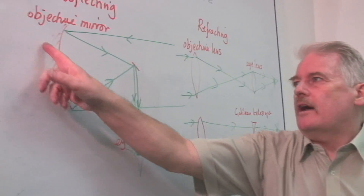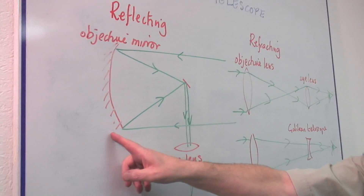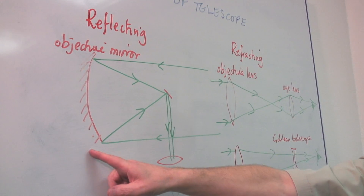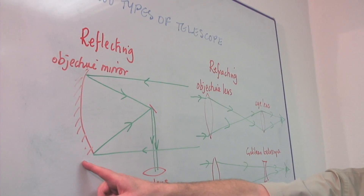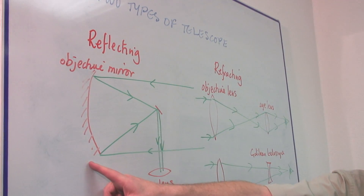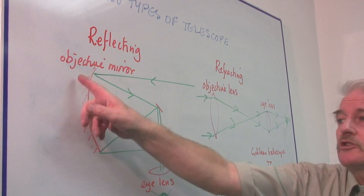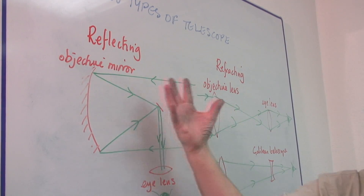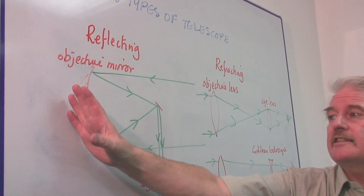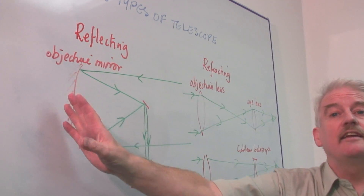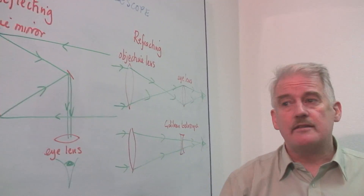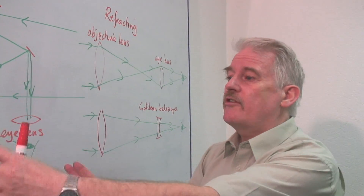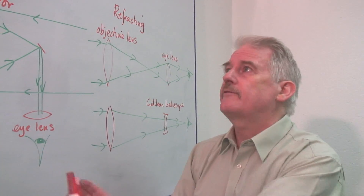Whereas an objective mirror can be many, many — 15, 20 feet across. It can be much, much bigger, and therefore the amount of light it can collect is much greater. It can be built onto a very solid platform.